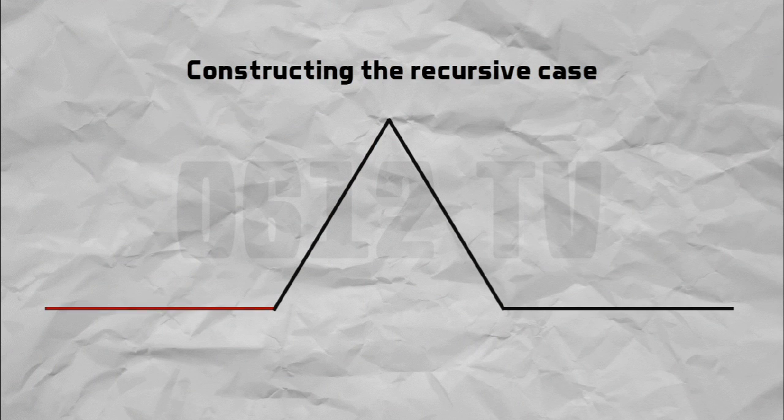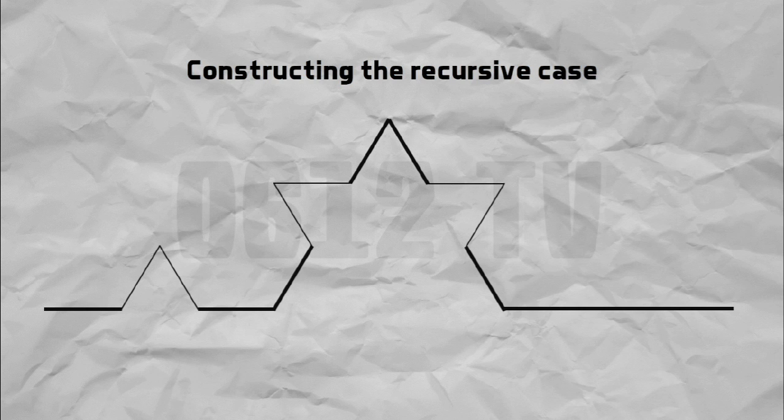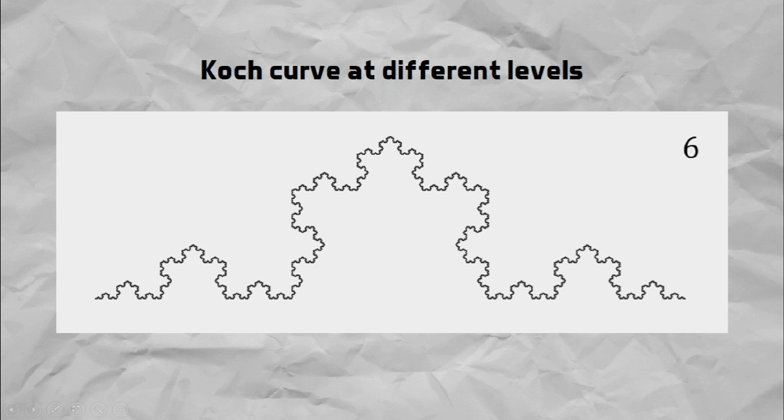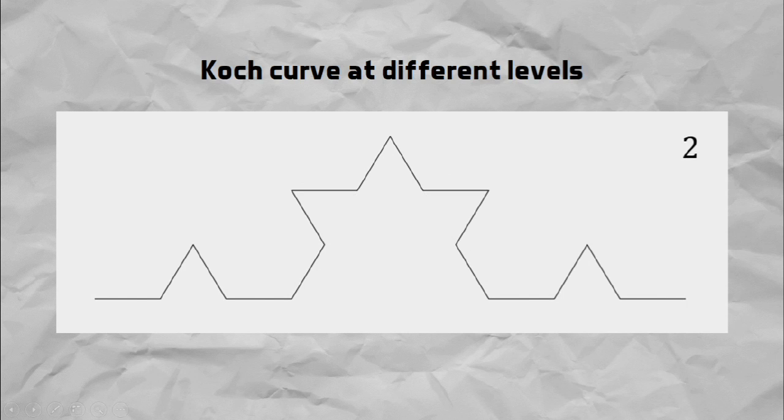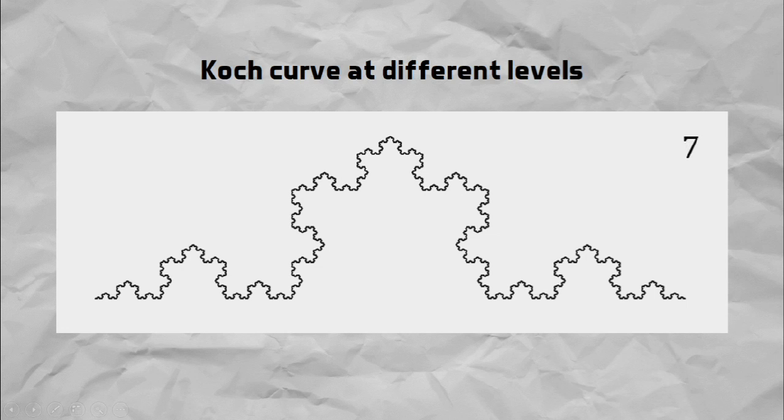The recursive case is when we actually replace the line segments with a scaled down version of the base case. That is, instead of drawing this straight line here, I'm going to plonk in another copy of the Koch fractal. Same deal for the others, and what you'll find is that the base case now appears four times to replace all of the straight edges. Can we repeat this? Certainly we can. Every single straight edge you see on screen can be replaced with another copy of the base case, this time much smaller.